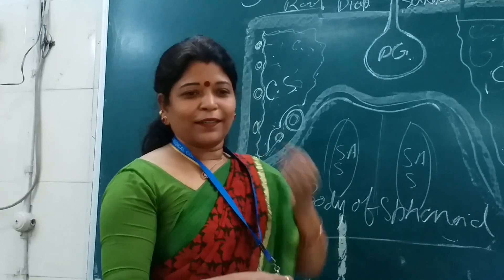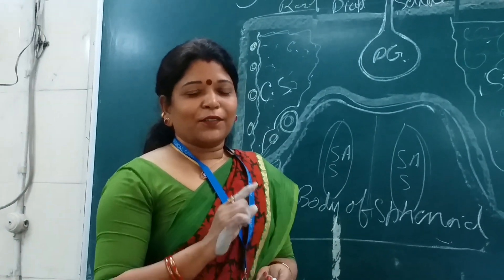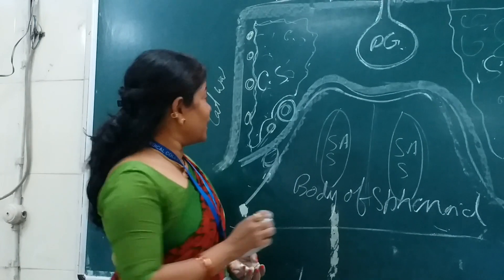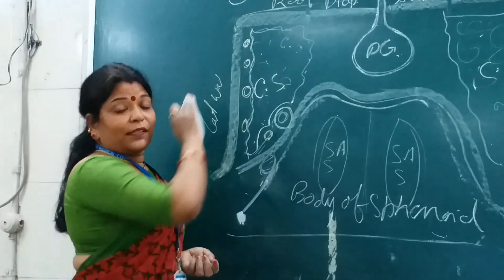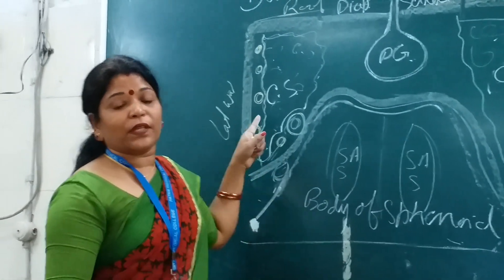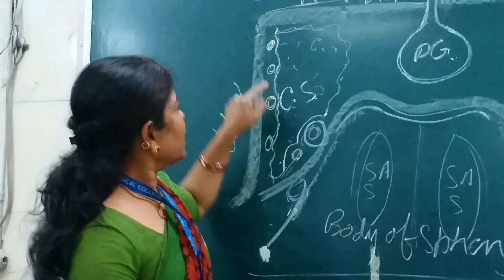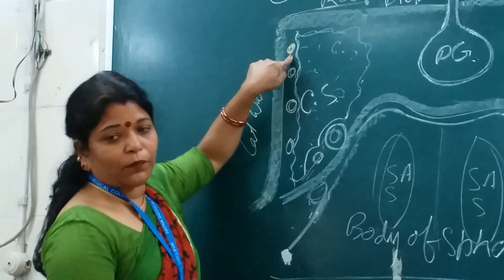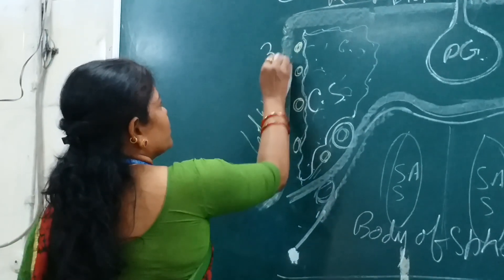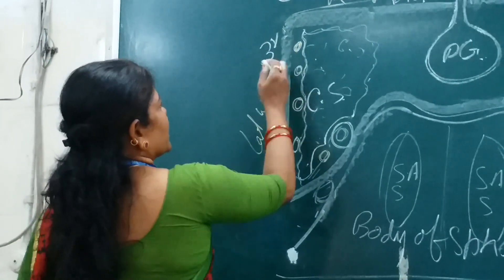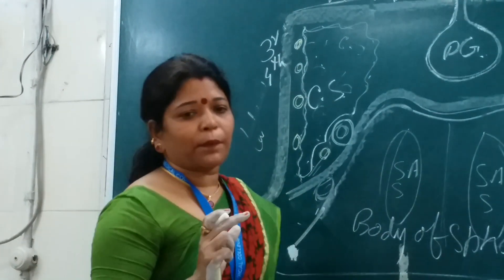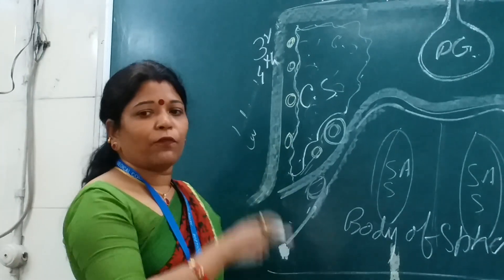The first structure is the oculomotor nerve. This lateral wall is related with the cranial nerves. Starting from the oculomotor - the third cranial nerve - and the fourth cranial nerve. So it is very easy to remember the structures in this lateral wall.